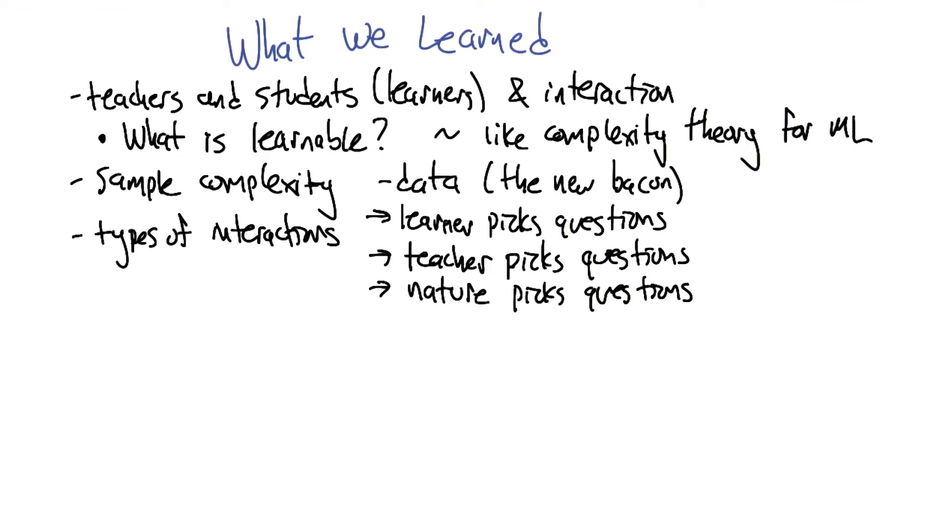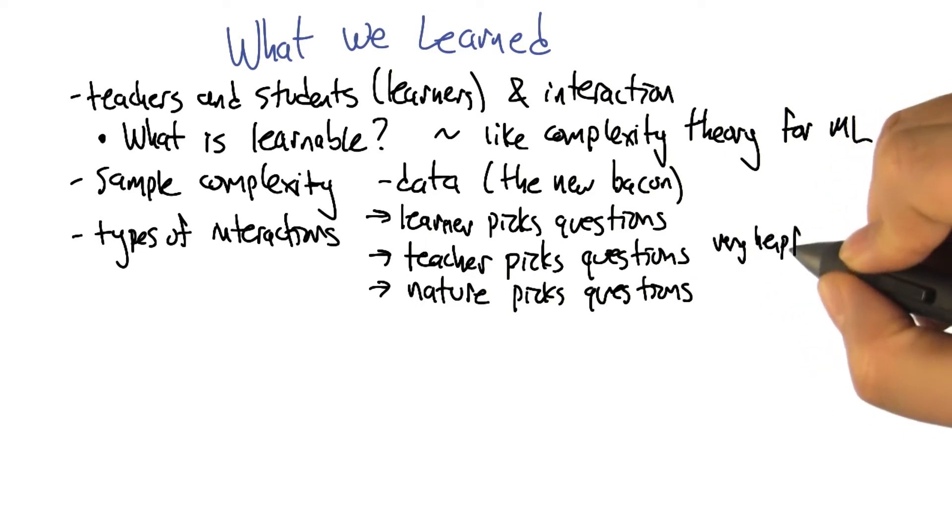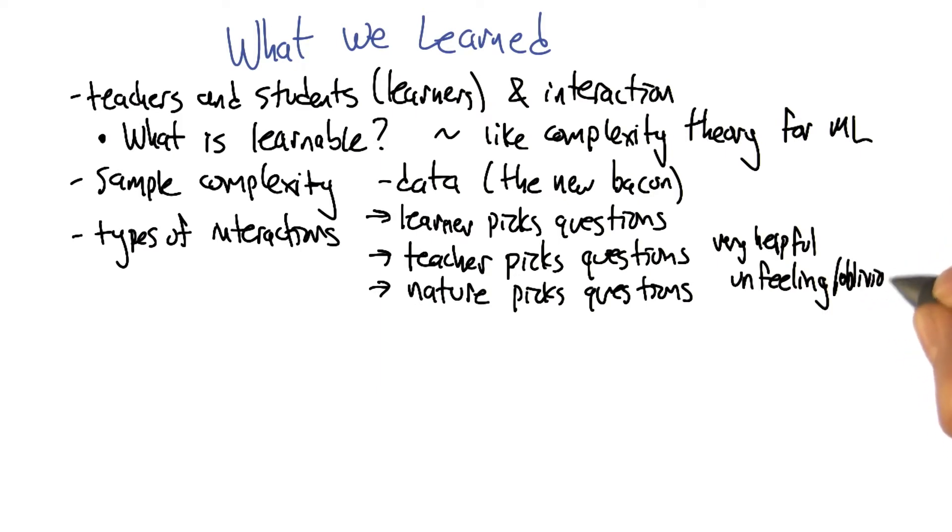Like the teacher, since the teacher knows the answer, can ask exactly the right set of questions that get you there very quickly. Versus when the teacher is just nature and you get it according to whatever distribution there happens to be. Sort of oblivious maybe is a better word. I think unfeeling. Nature just doesn't care about me.